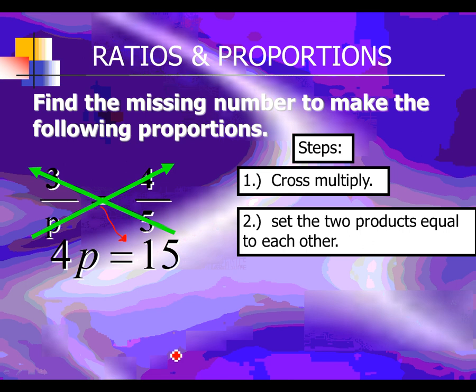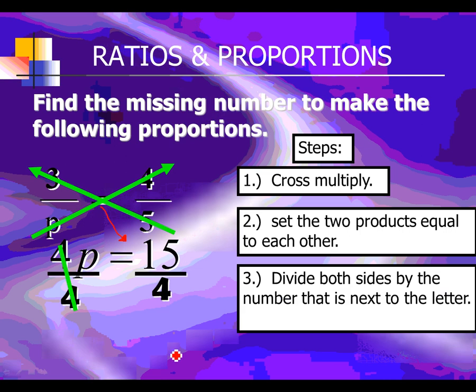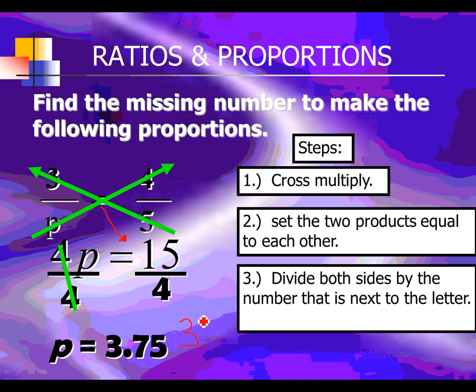Next, solve the equation. This is a basic multiplication equation, and to solve it we do the inverse operation. The inverse operation of multiplication is division. We're going to divide by 4. 15 divided by 4 comes out to 3.75. If you want to write it as a mixed number, that's 3 and three-fourths. Either one is fine — I don't care whether you write your answer as a decimal or as a mixed number.